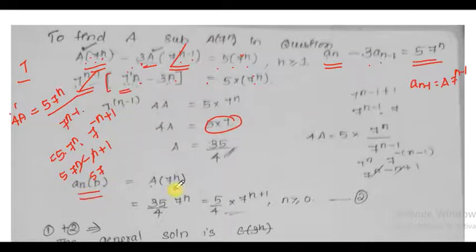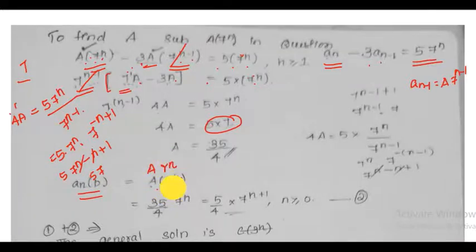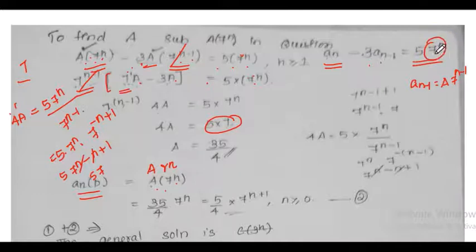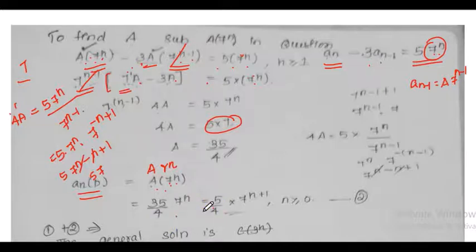Therefore the particular solution is a(n)_p = A·r^n = (35/4)·7^n, which can also be written as 5·7^(n+1) / 4.